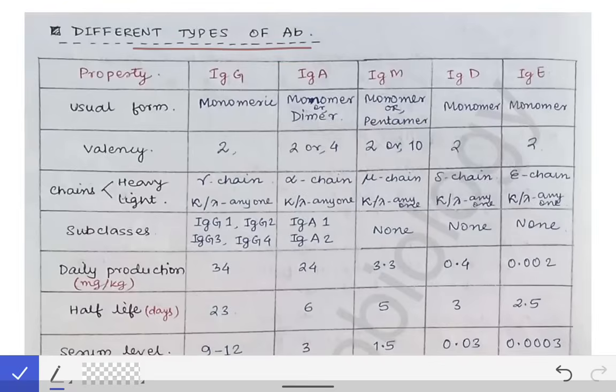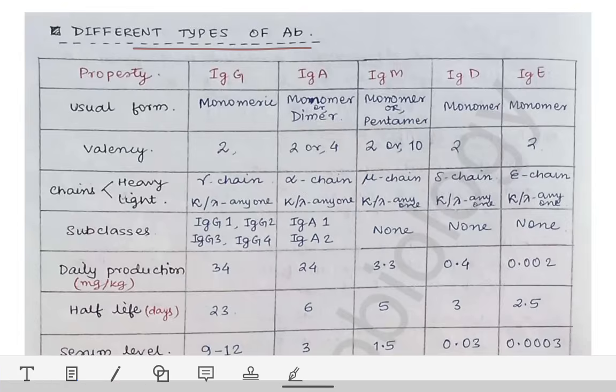We will be discussing the second part of the antibody, covering all the different types of antibody. This is a very factual topic and examiners generally ask short notes from this topic — for example, to write a short note on IgG, IgA, or IgD. You can answer only if you remember some of the important features of all those antibodies.